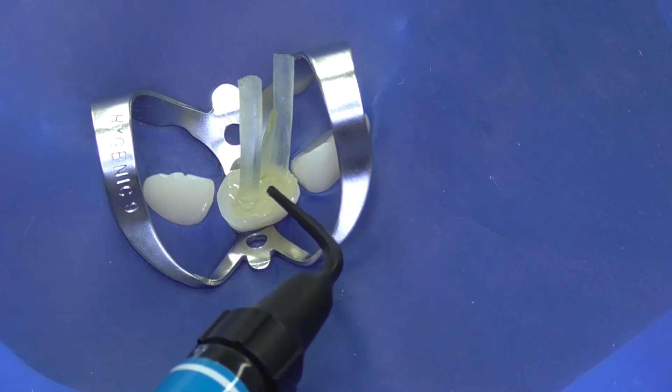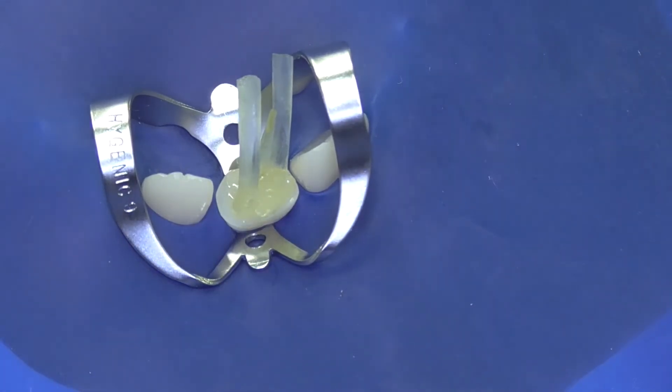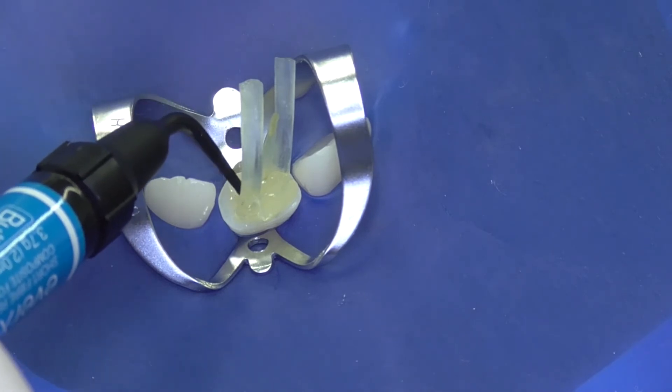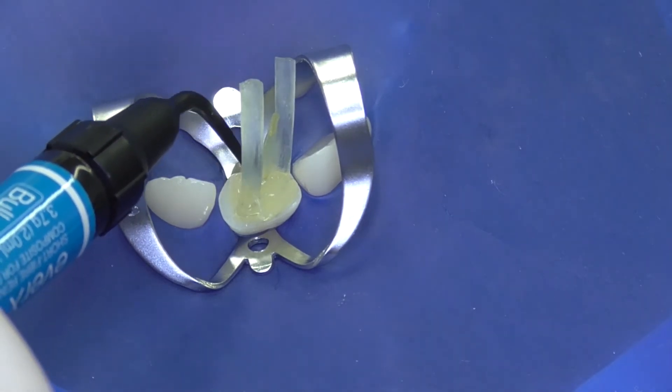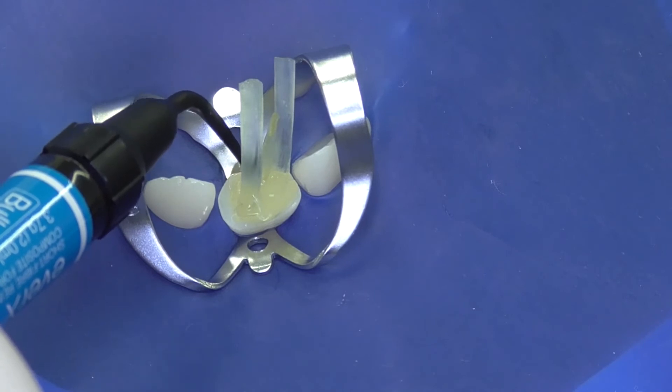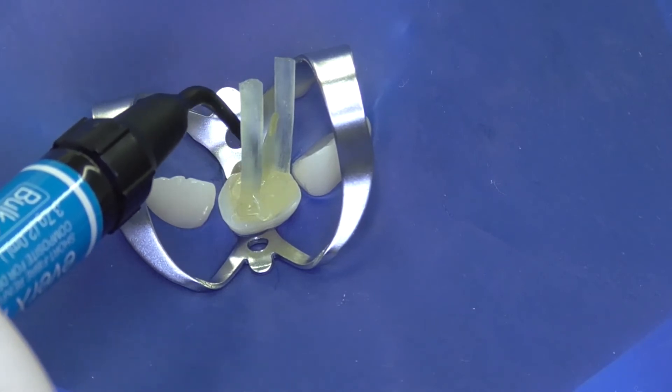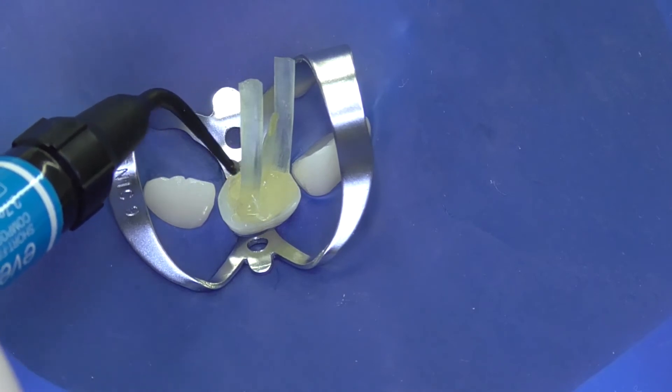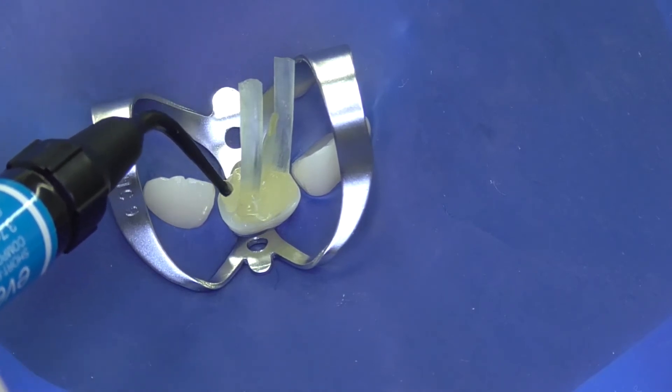Gradually, we are filling all the gaps between the fiber post and building the core on top of the Gradia composite, which was the luting material. Due to the oxygen inhibition layer on the Gradia surface, adhesion of this fiber reinforced composite core buildup material will be optimal.